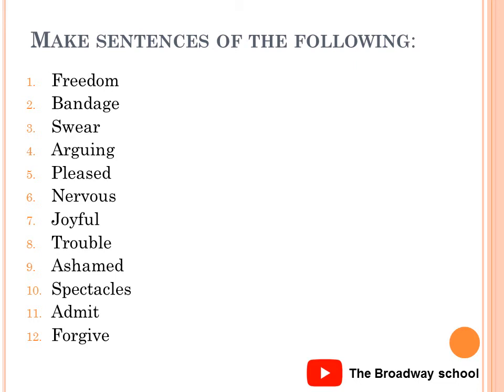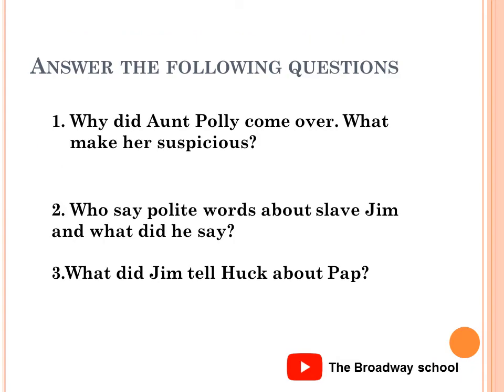Number nine: ashamed — which means to feel sorry. Number ten: spectacles — which means a pair of glasses. Number eleven: admit — which means to acknowledge. And the last word: forgive — which means to pardon or excuse.